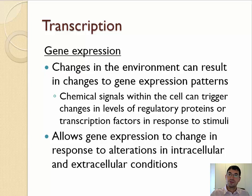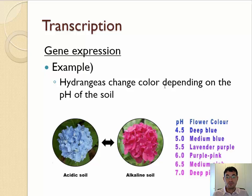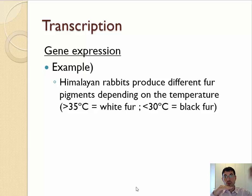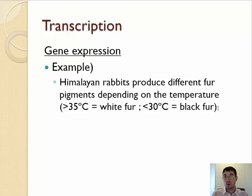Here are some other examples of different gene expression. Hydrangeas are a type of flower that will change the color they make based on the pH of the soil in which they grow — the more acidic it is, the more blue they are; the more alkaline or basic it is, the more pink they are. Himalayan rabbits will change the color of their fur — literally which proteins they make to color their fur — depending on the temperature. When it is more than 35 degrees Celsius, they grow white fur, which helps them reflect more light and stay cooler. When it is less than 30 degrees Celsius, they grow black fur, which helps them absorb more light and stay warmer.